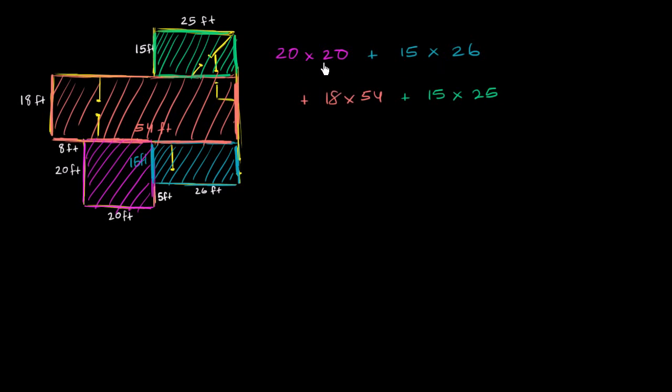So we just have to now evaluate these things. So what is 20 times 20? Well, this is going to be 400. What's 15 times 26? Well, let's multiply it out. 26 times 15. 6 times 5 is 30. 2 times 5 is 10, plus 3 is 13. Now I'm going to multiply 10 times 26, gets us to 260. And you add these two together, you get 390. So it's 400 plus 390.